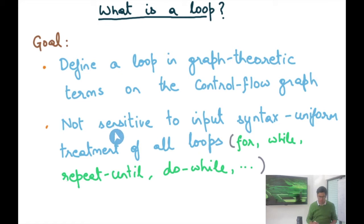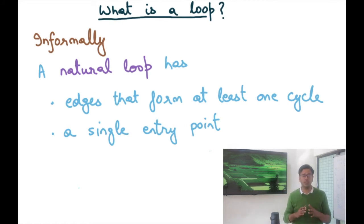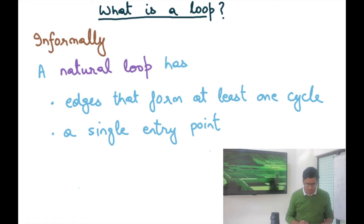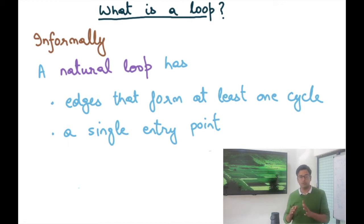Similarly, we want a canonical representation of the loop that is not sensitive to input syntax, so we can have uniform treatment for all loops. Informally, we're going to define a loop — and to distinguish it from a mere cycle, we'll call it a natural loop. A natural loop has edges that form at least one cycle, but it also has a single entry point.